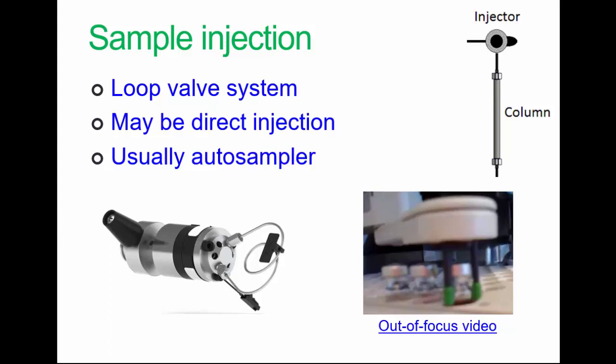Some systems still use injection from hypodermic into a loop valve system, where the loop is a very accurate measure of, say, 20 microliters. However, these days, most often an auto-sampler system is used, such as the example given in this somewhat out of focus and wobbly video. But I'm sure you'll get the point, so have a look at the video.